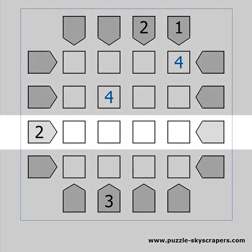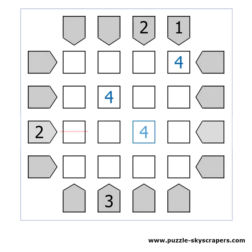Now let's find the 4 on the third row. The first cell is not an option, as it will block the view to the other skyscrapers and we need to see 2. We already have a 4 in the second and the fourth column, so the 4 must be in the third column. Let's focus on this cell. If we had a 3 there, it would violate the 2 on the left. And if we had a 1 there, we will see only 2 skyscrapers from the bottom. So we must have a 2 in that cell.